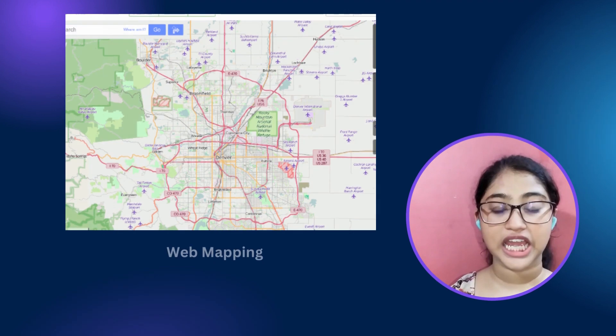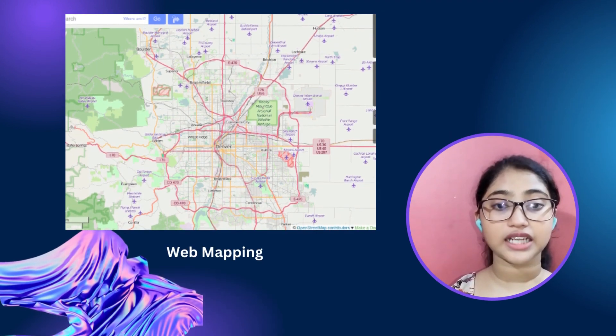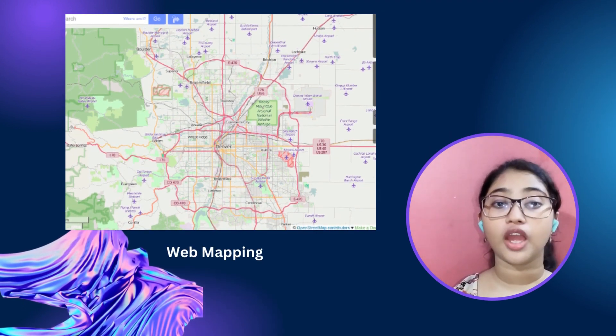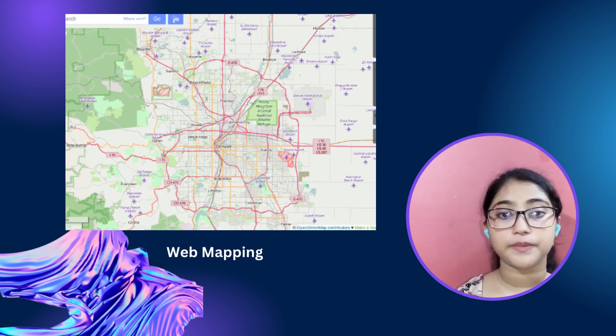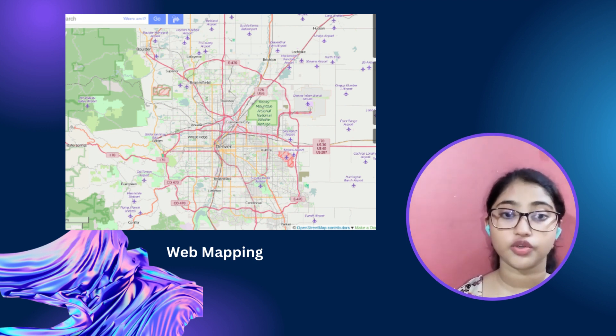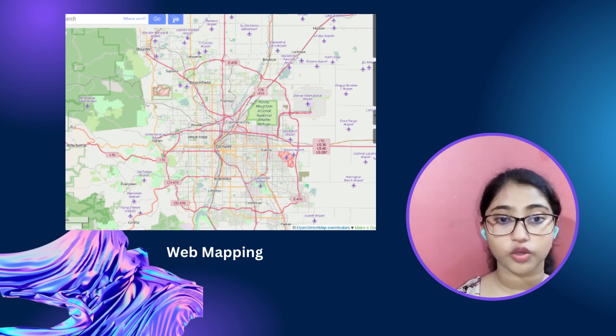GIS can be used in various sectors including the IT sector. GIS can help IT professionals to develop, manage and deliver location-based applications and services. Some of the applications of GIS in the IT sector include web mapping. GIS can be used to create interactive web maps to display geospatial information on the internet. Web maps can be used for various purposes such as tourism, education, navigation, business intelligence and social media.